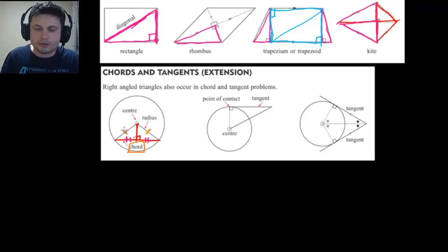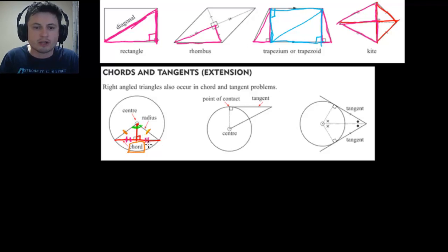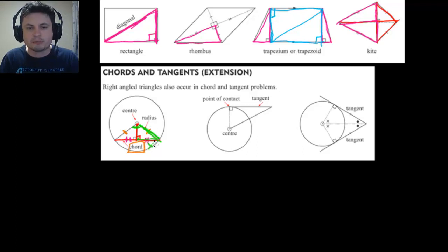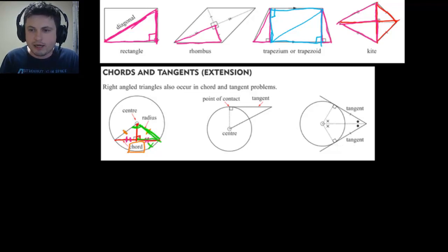A possible question might give you an angle and ask you to find the length of a chord. As long as you know the radius of the circle and have the angle, you can use sine (opposite divided by hypotenuse) to find the missing value X. We're going to look at an example very similar to this shortly.